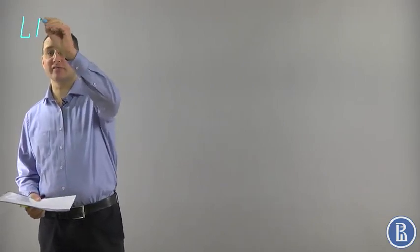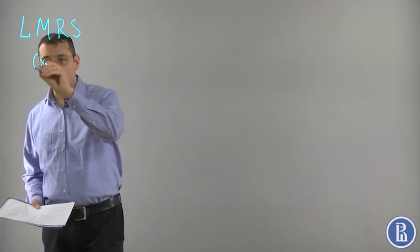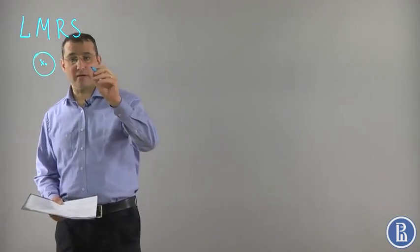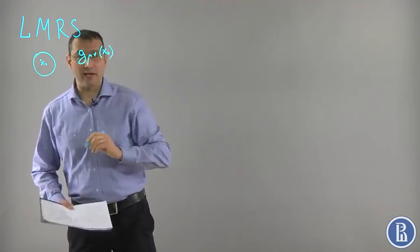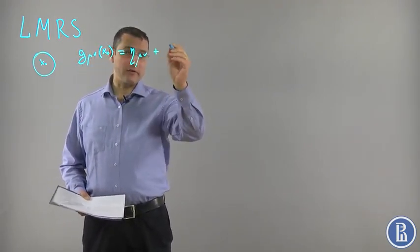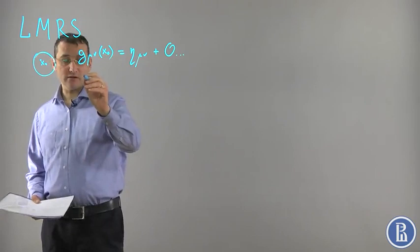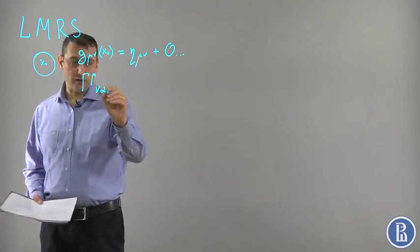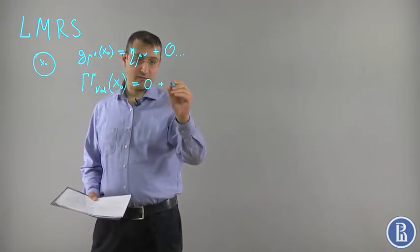To move further, let me define the so-called locally Minkowskian reference system or reference frame. It is such a reference frame in a vicinity of a point x0 which has the following property: we choose a coordinate system such that in the vicinity of this point, g_μν(x0) = η_μν plus corrections, and Γ_μνα around that point equals zero plus some corrections.